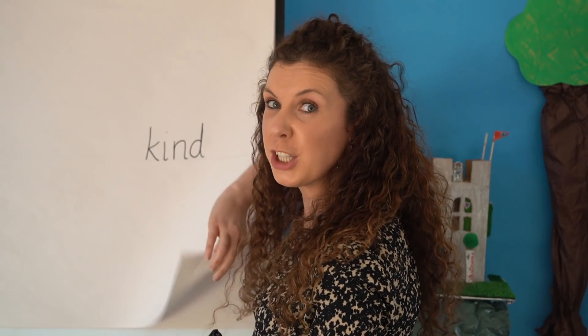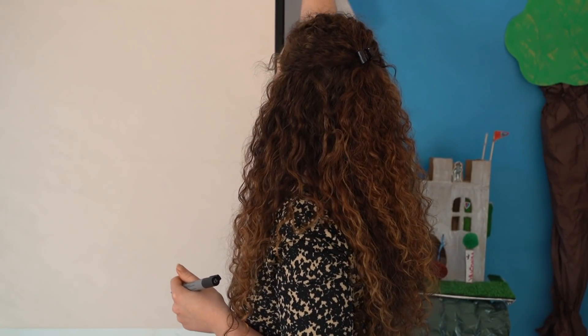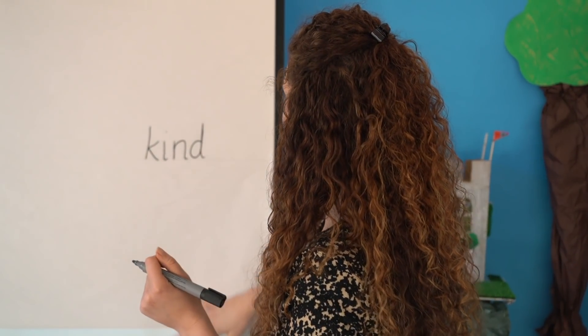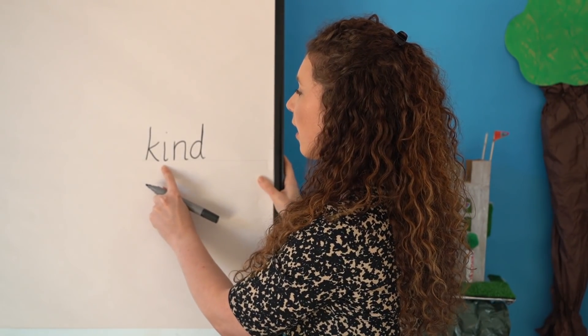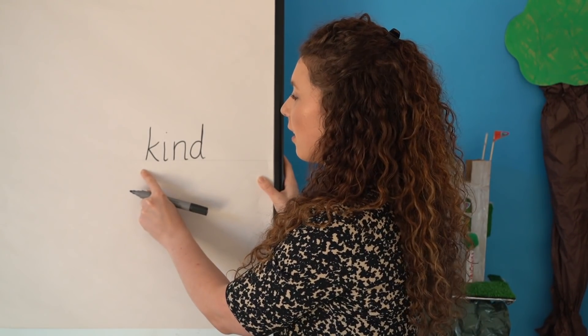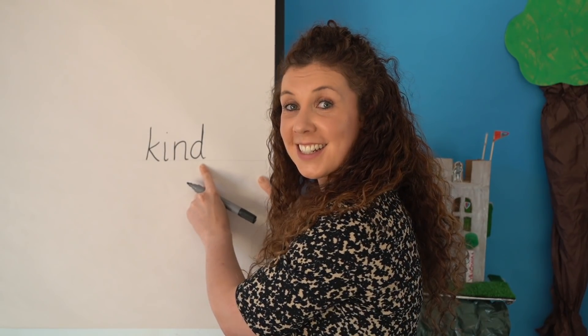You have a go. Say the word: kind. Say the sounds: C, I, N, D. Write them down. Okay, let's check our spelling. Show me your spelling. Okay, let's have a look. C-I-N-D. Kind. Did you get it right? Super.